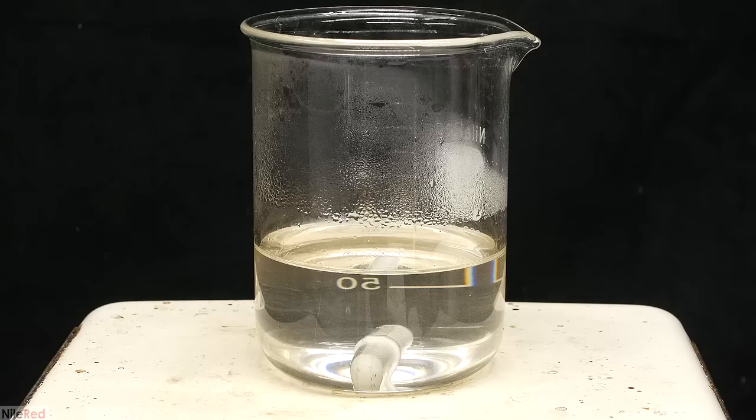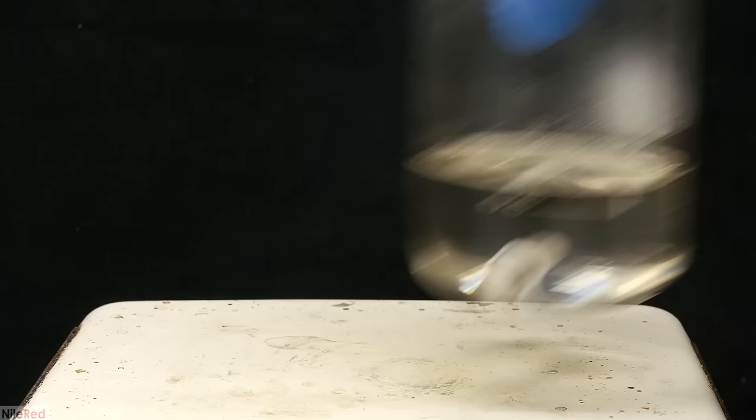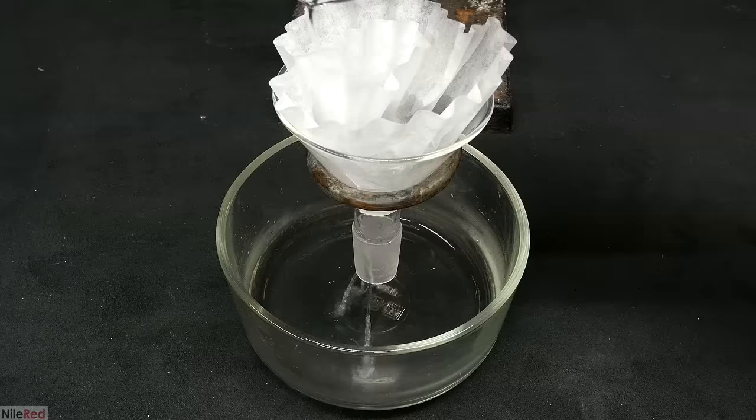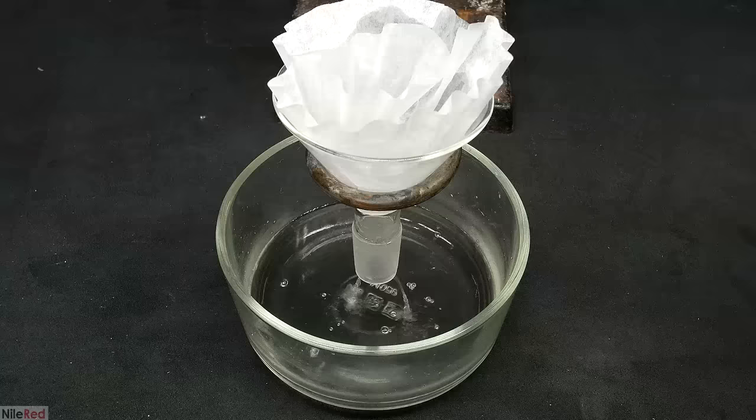However, if you look closely, you'll see there are a bunch of impurities floating around, and I need to filter these off. This is very easily done by just passing it through a coffee filter. Once everything had been filtered, I washed the beaker and the filter paper with a little bit of distilled water. The funnel is taken away, and I wait for things to crystallize.